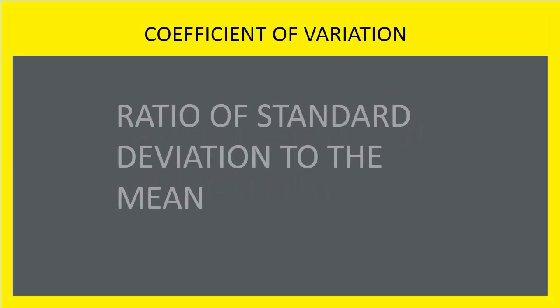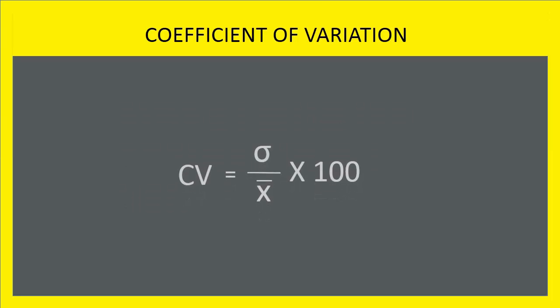Coefficient of variation is the ratio of the standard deviation to the mean. This is obtained by dividing the standard deviation by arithmetic mean. It is usually expressed in percentage.